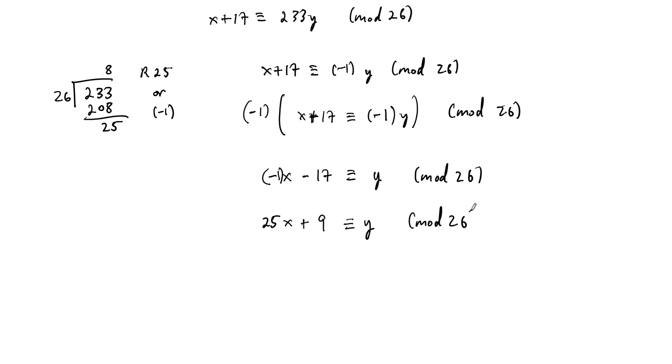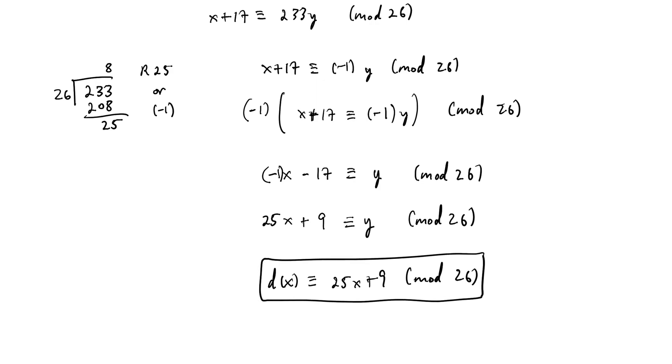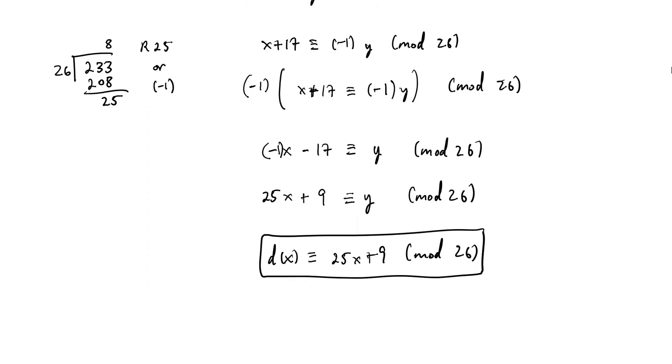And this tells us, then, that our decryption function, d of x, is equal to, or congruent to, 25x plus 9, mod 26. And there you go. That's all you have to do. So it's just like solving a linear congruence, but rearranging it so you solve for a variable. And put it back in function form. And that's all you have to do.